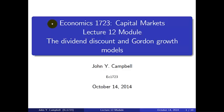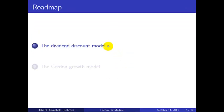Welcome to Economics 1723 Capital Markets. This is the online lecture module for lecture 12 on the dividend discount and Gordon growth models. We'll start with the general framework of dividend discounting at a constant rate — the dividend discount model — and then look at a special case in which dividends grow at a constant rate, which is the Gordon growth model.